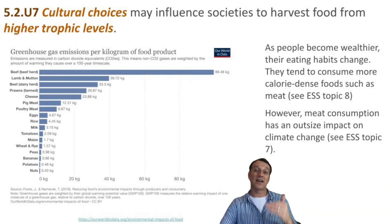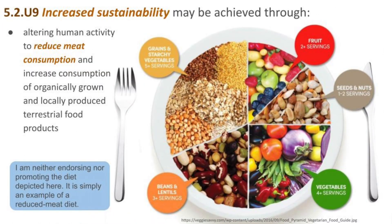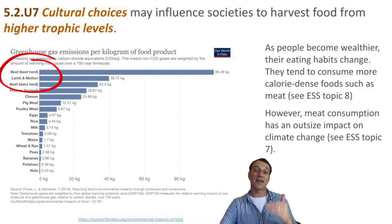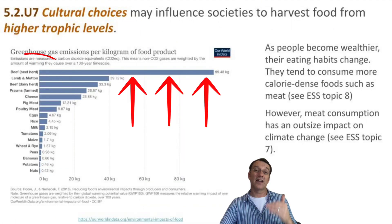As people get richer, they tend to change their diet — often eating more meat and other animal products. However, these foods generally have a bigger environmental footprint. Beef, for instance, has a much higher impact on things like greenhouse gas emissions and water use compared to most plant-based foods.